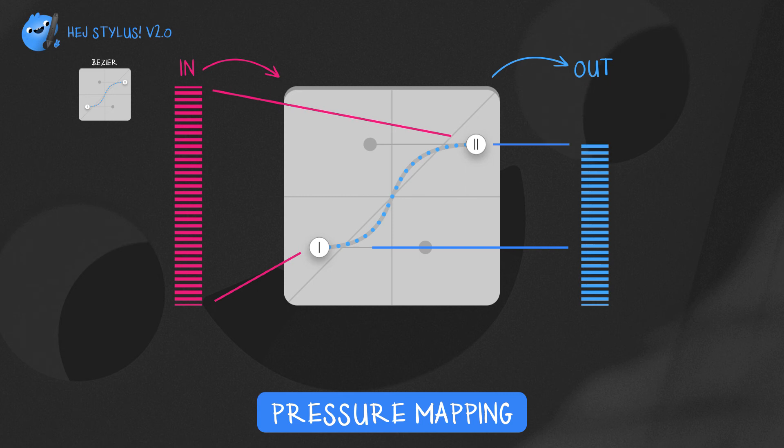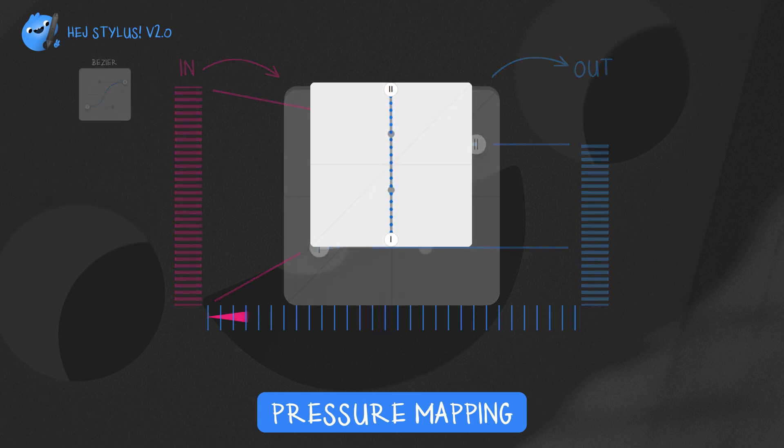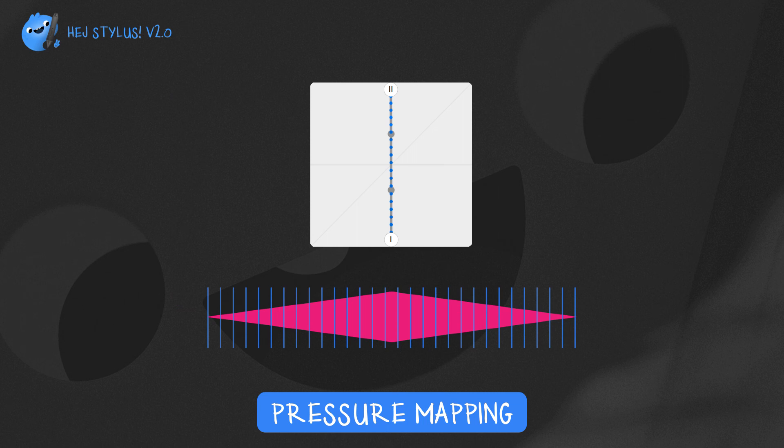When using Bézier transfer style, you'll probably notice the little dots on the connecting line between the two points. These dots resemble the steps in which the pressure will be mapped.